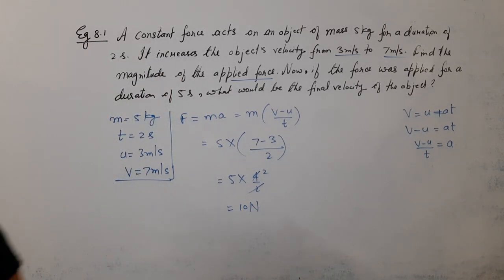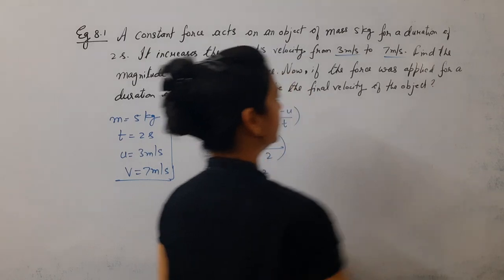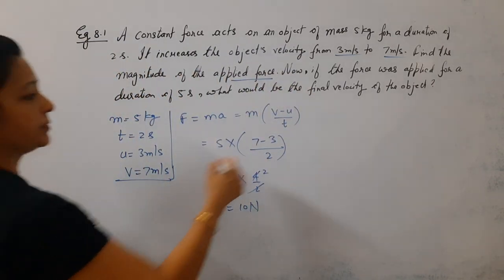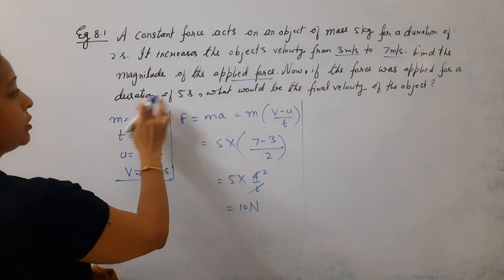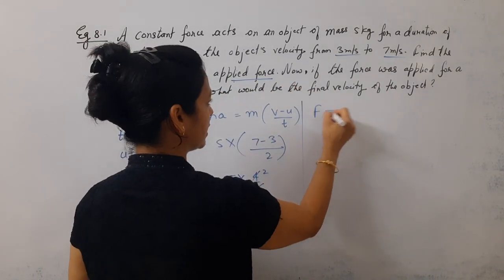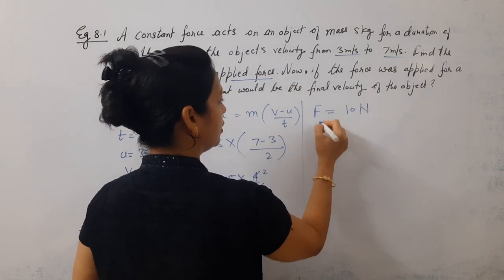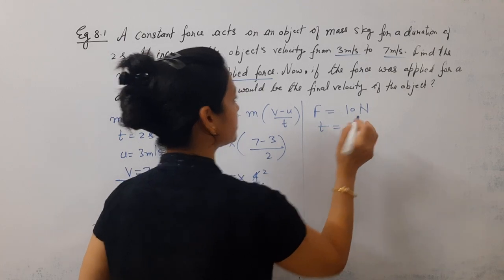Okay, now doing the second part. Now if the force was applied for a duration of 5 seconds. The force is the same, 10 Newton, and we will apply it for 5 seconds. What will be the final velocity?